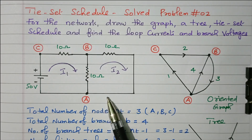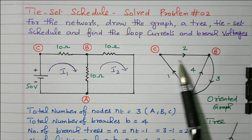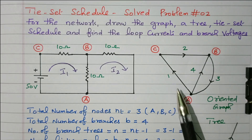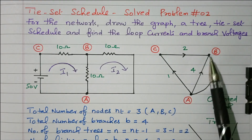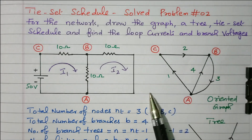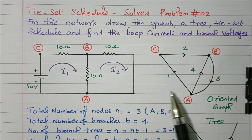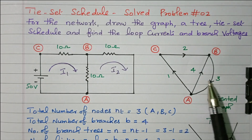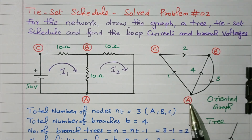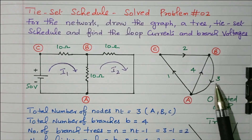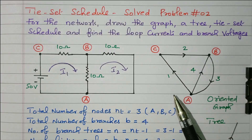First we need to draw the graph for the given network. The graph is formed when network elements are replaced by straight lines. If direction is also given, it is called an oriented graph. So this 50V source and these resistors are simply represented by straight lines. There are three nodes A, B, C. Between A and C is branch 1 (the voltage source). Between A and B are branches 3 and 4 (two resistors). Between B and C is branch 2. So three nodes A, B, C and four branches. The directions are chosen as per our own convention — this is called an oriented graph.